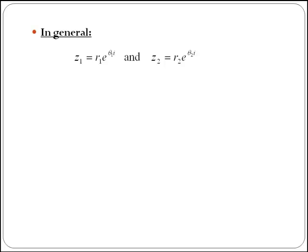So in general, if we have two numbers: z1 equal to r1, which is the modulus, times e^(θ1i), which is the argument, and then we have z2, which is our second number, which has modulus r2 and angle θ2, if we multiply them, we have z1 times z2.